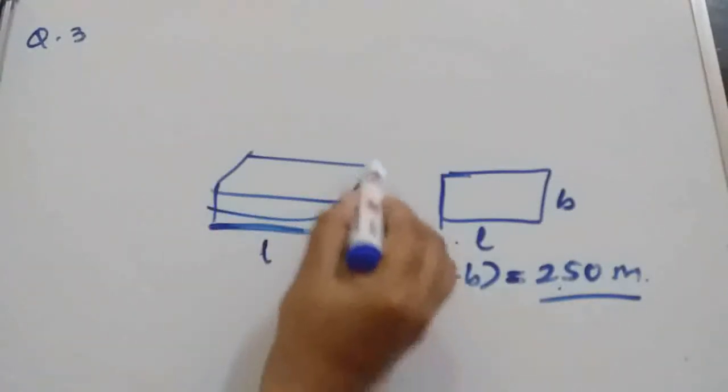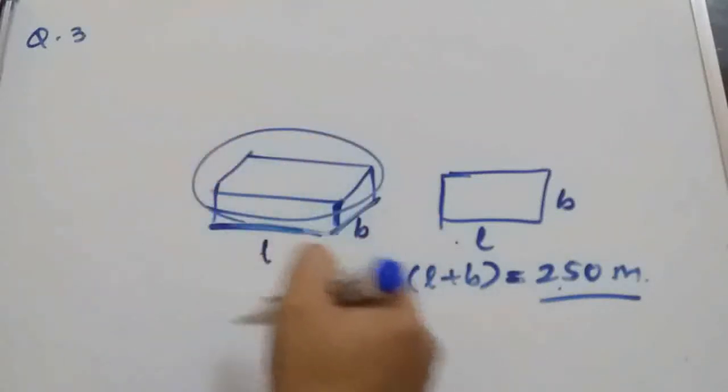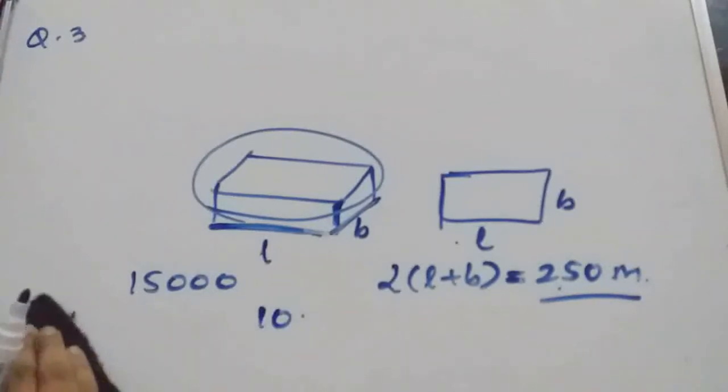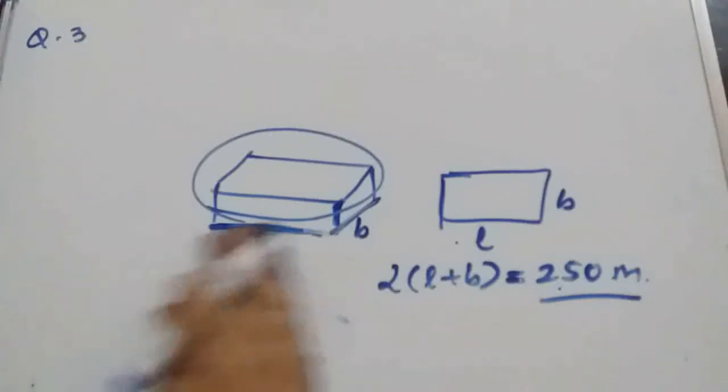Then cost of painting of 4 wall is given. Total cost is given 15,000. And cost of 1 meter square is also given that is 10. So we can find total area of the 4 walls. So first we should write here.